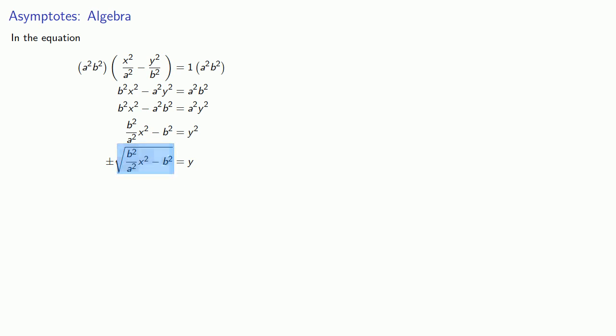And so we can say that y is approximately the square root of just the first term of the radicand, which reduces to b divided by a times x. And another way of looking at this is that y gets close to the line b divided by a x.